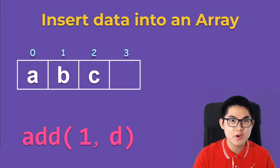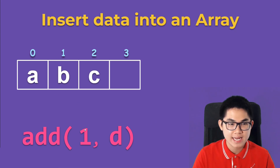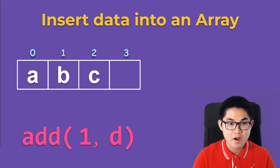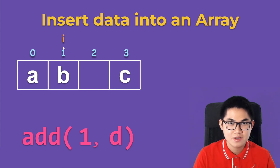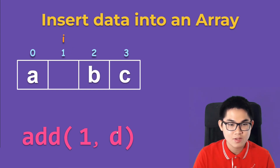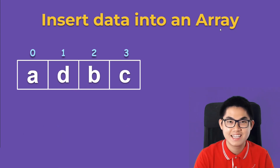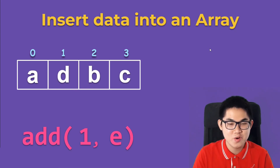Next, let's insert the letter D at the middle of the array, at index one. The first step is to check for space — there are three letters and four squares, so there is enough space. We put the iterator at the last letter at index two, move C to the right, move the iterator to the left, then move B to the right. Now we're at index one, so we put D in.